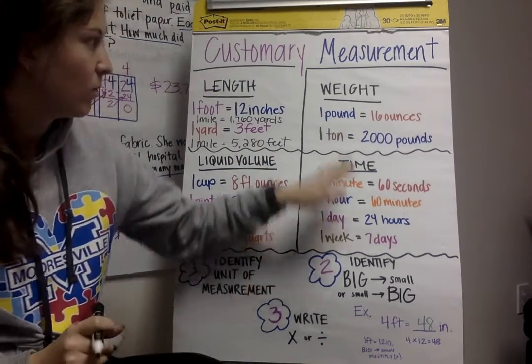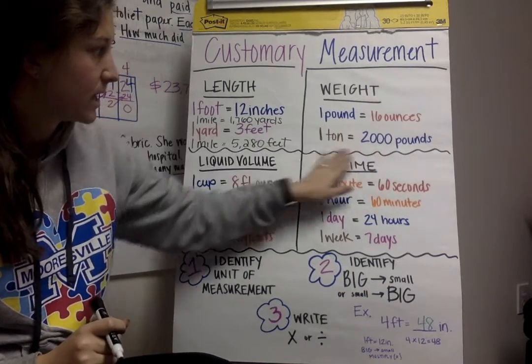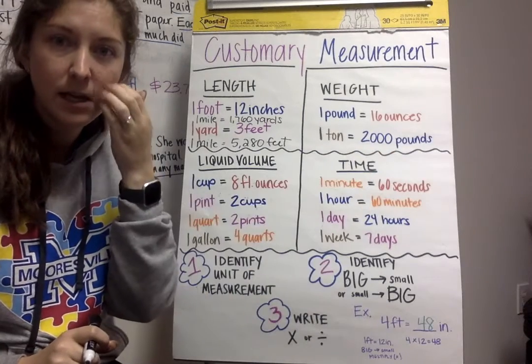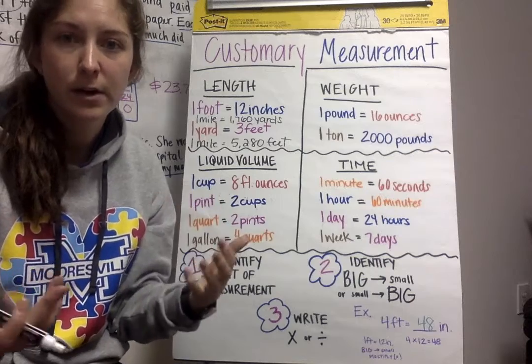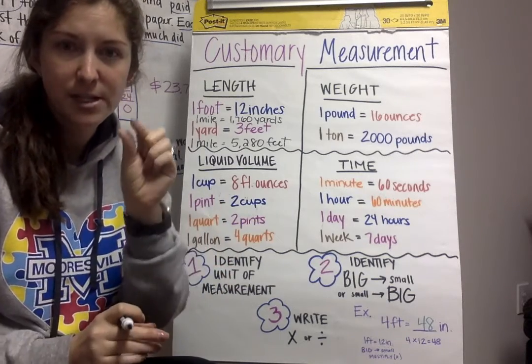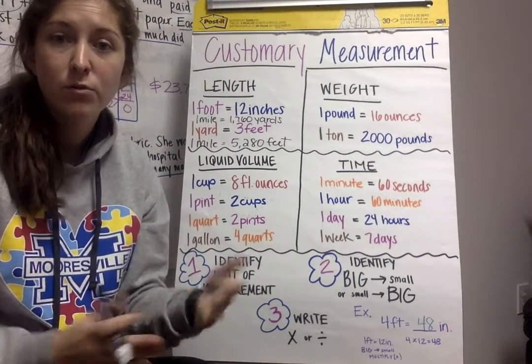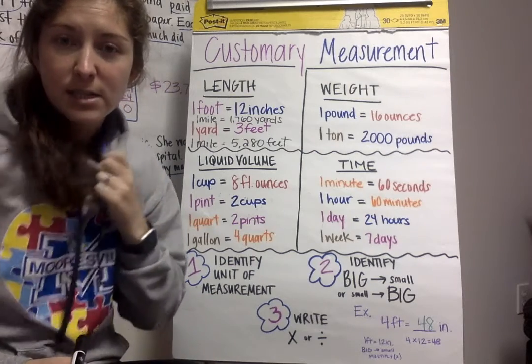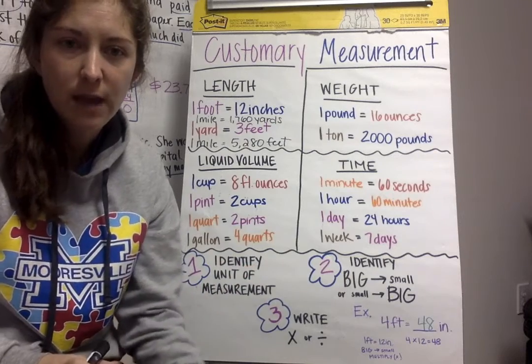So then we have weight. We have one pound equals 16 ounces, and one ton equals 2,000 pounds. And a ton is kind of what we think about with an elephant. Things that are very, very heavy. An ounce is something very, very small, a paper clip, something like that. And then a pound. You can ask your parents how much you weighed at birth. I weighed 7 pounds and 6 ounces when I was born, so humans would weigh pounds.